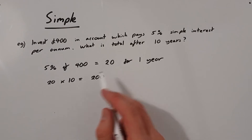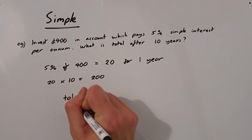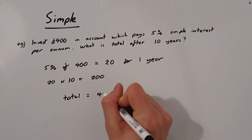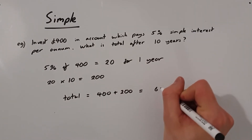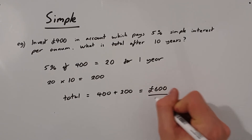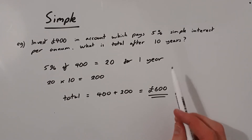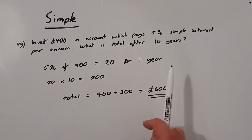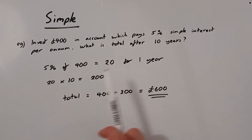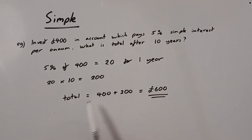So our total is just the original amount plus how much we've earned with the interest. The total after 10 years would be £400 plus £200, giving us £600. With these questions we have our original amount, it pays the same percentage of that original amount every year — the payment doesn't change — and then we multiply that by the number of years to get our final answer.